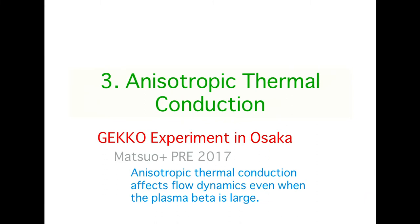The last topic is anisotropic thermal conduction. This is a result of the Gekko experiment that is already published. The important conclusion is that anisotropic thermal conduction affects the flow dynamics even when the plasma beta is large — that is the important result of this paper.